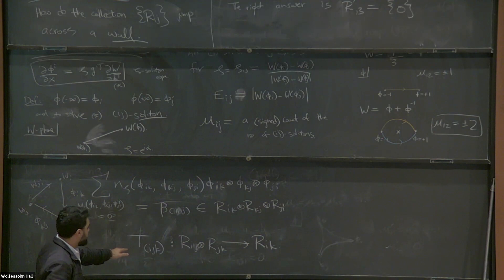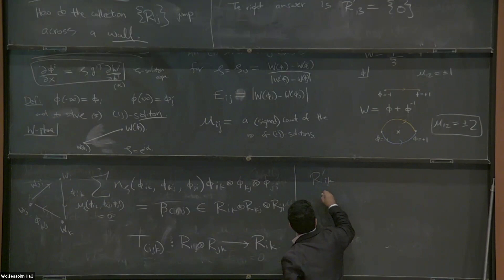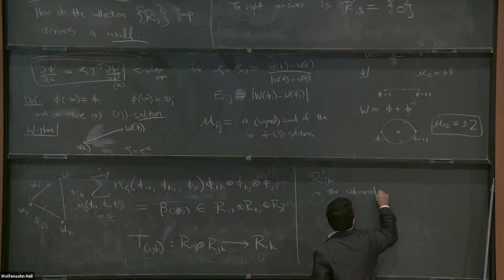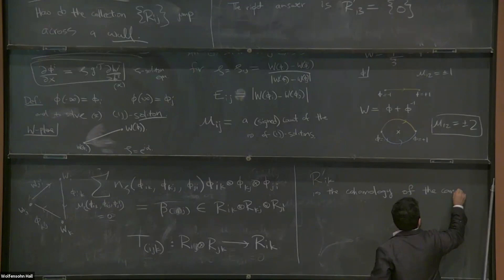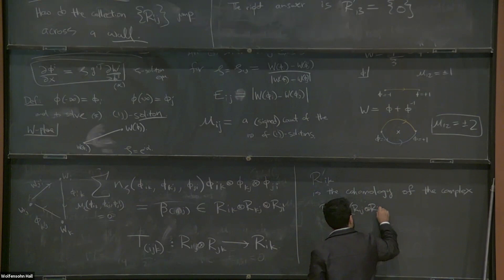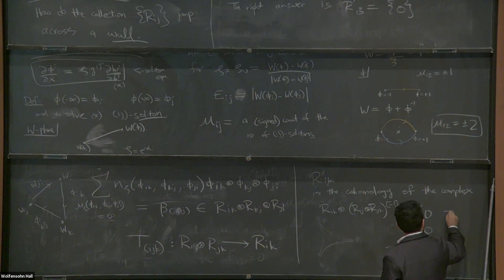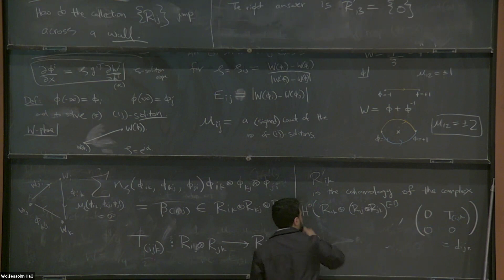The upshot of using this trivalent instanton is the categorical wall crossing formula: R'_{ik} is the cohomology of the complex R_{ik} direct sum (R_{ij} tensor R_{jk}), where the differential is T_{ijk}. Equivalently, R'_{ik} is the mapping cone of this chain map T_{ijk}. This formula incorporating trivalent instanton junctions allows you to answer how the BPS Hilbert spaces jump across a wall of marginal stability, and this can be proved for various situations including twisted masses and four-dimensional cases.